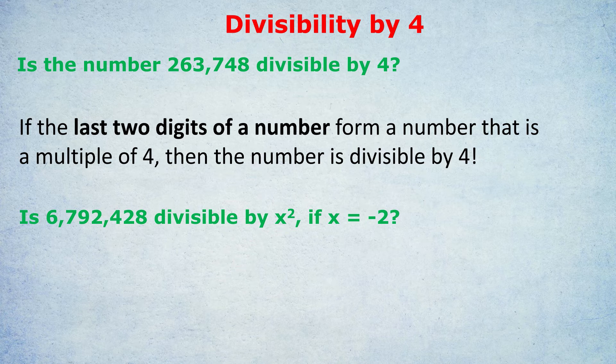Minus 2 squared is 4. So the actual question is, is 6,792,428 divisible by 4? And can you tell me if it is? It is divisible by 4, because look at the last two digits, 28. 28 is a multiple of 4, and therefore, the entire number is definitely divisible by 4, a multiple of 4. All we had to do is check the last two digits, not sum them up, just do they form a number that is a multiple of 4? And how much time was saved? No long division at all.